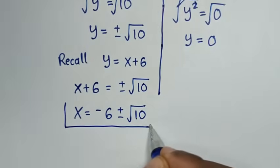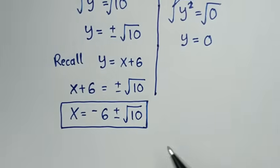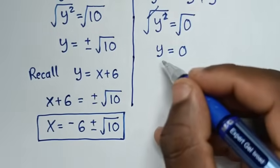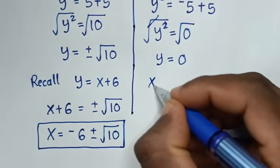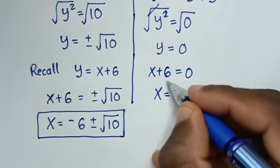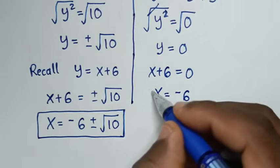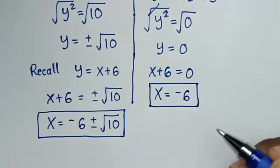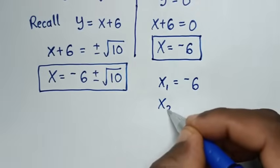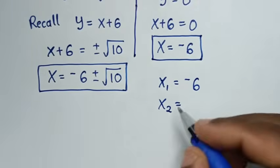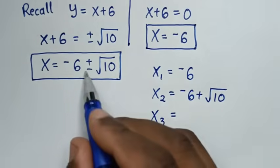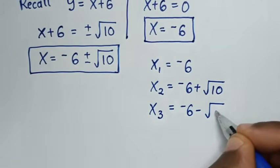For y = 0: x+6 = 0, so x = −6. Both solutions are real (no imaginary numbers). In total we have three values: x = −6, x = −6+√10, and x = −6−√10.